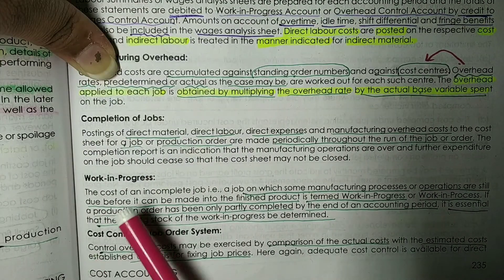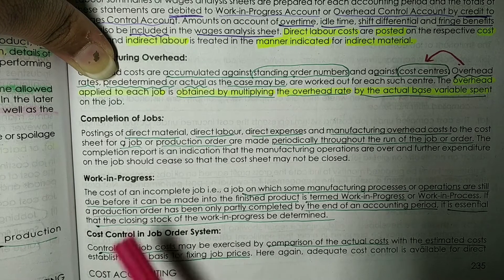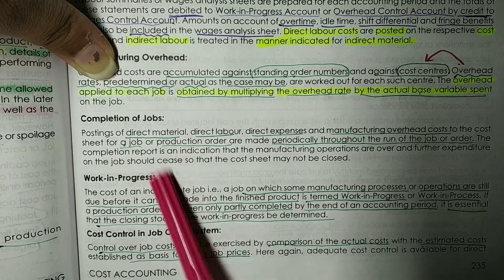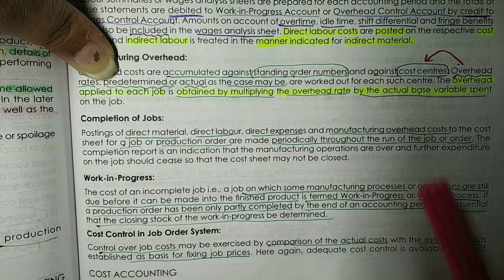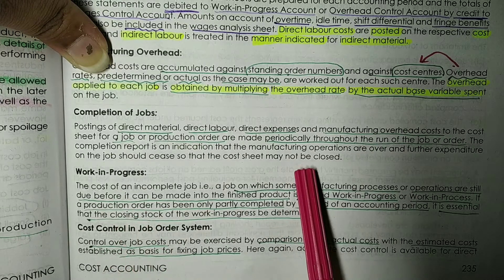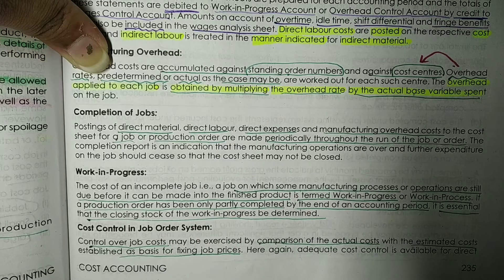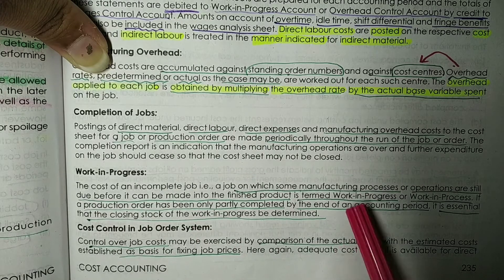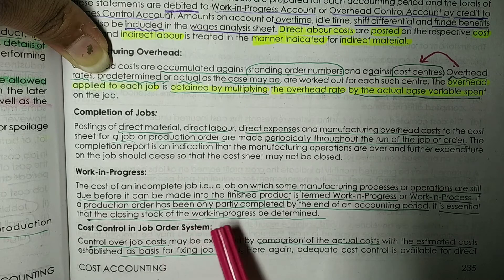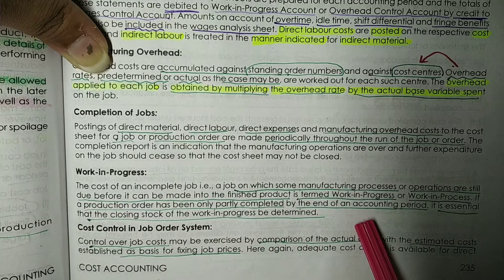So next, what is work in progress? Basically, it is an incomplete job. We are in the process of converting raw materials into finished goods — that is the work in progress. If a production order has been only partly completed by the end of an accounting period, that portion is classified as work in progress.